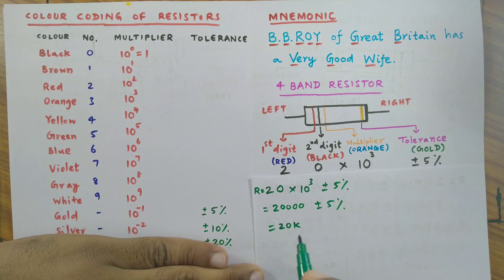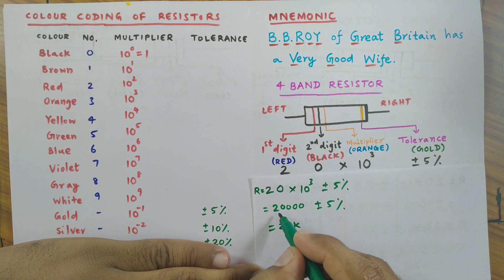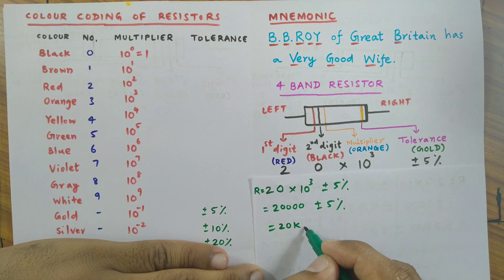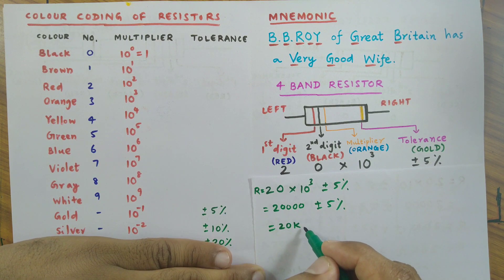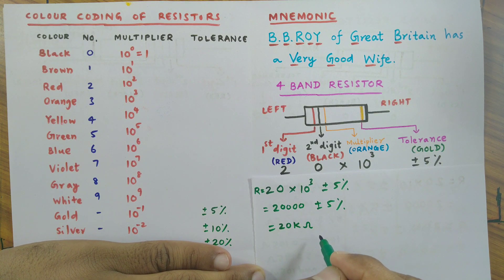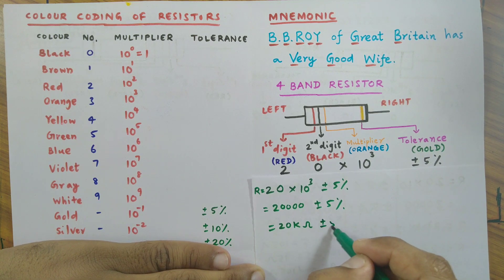Then in the next step, I replace these three zeros with K. K stands for kilo, kilo means thousand, so 20 kilo-ohm. The unit of resistance is ohm - I put its symbol omega. So 20 kilo-ohm with plus or minus five percent tolerance.